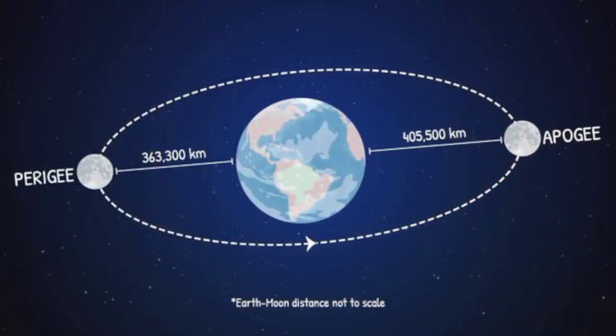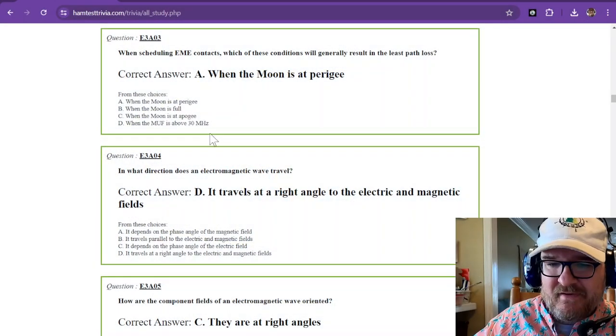Perigee, the Moon is only 363,000 kilometers away. At apogee, it's 405,000 kilometers away. So there's a greater distance at apogee, and so there's going to be more loss, but you can get more distance out of it. And perigee, got a bigger target, too. All right, let's go back to the test and see what else we have here.